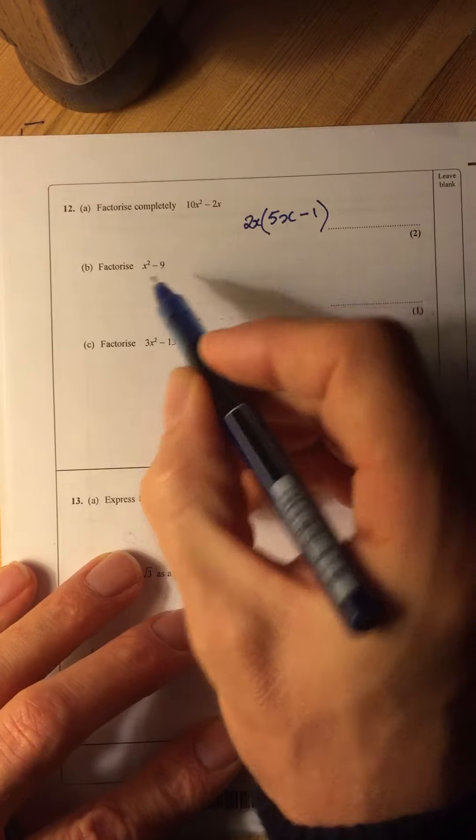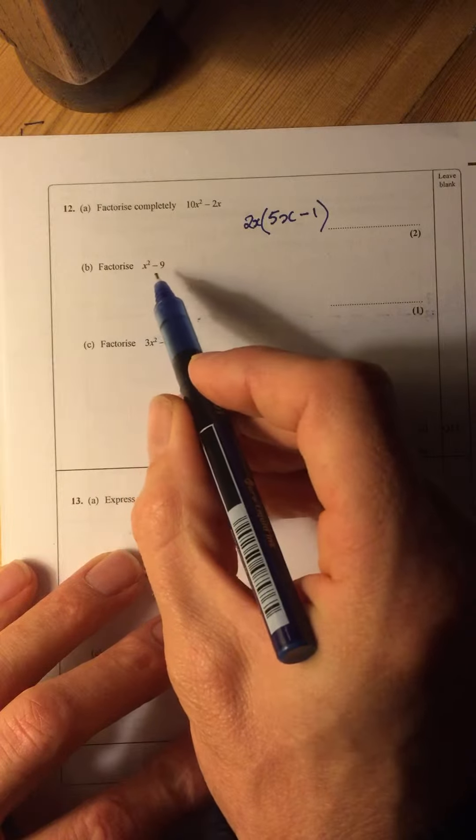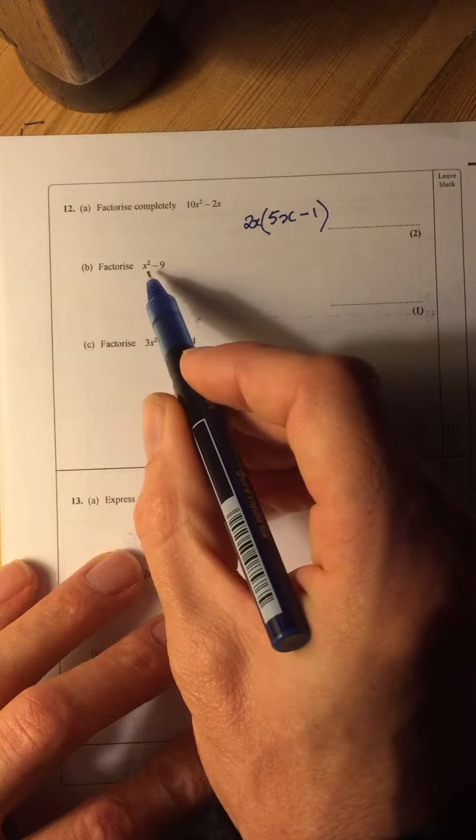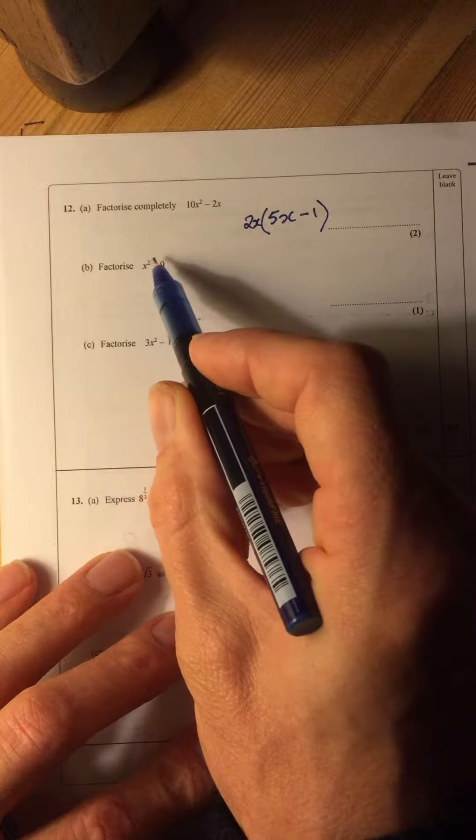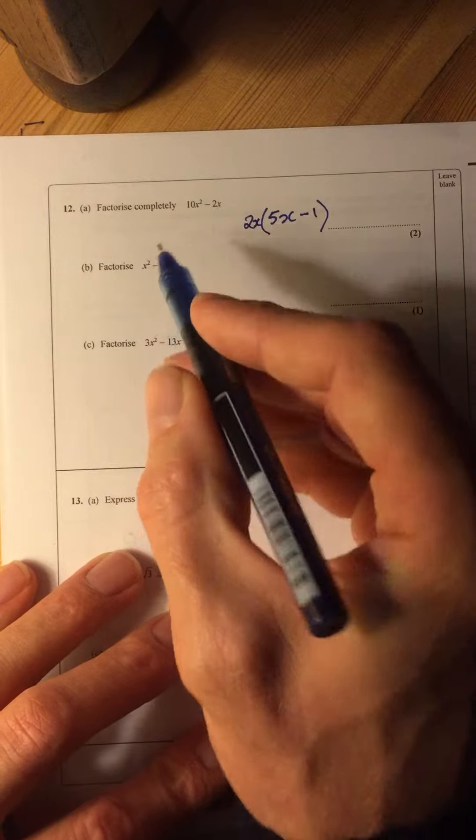This factorisation, it's a quadratic, so it's likely to be two brackets. And actually this is a special one called the difference of two squares, because this is a square and this is a square.